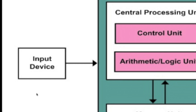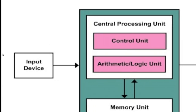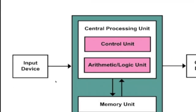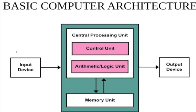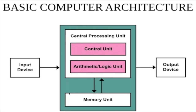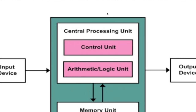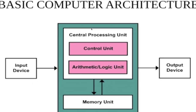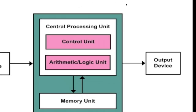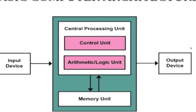Data and instructions are received by the computer through input devices. The received data and instructions will be processed in the CPU. The processed data will then come out through output devices.